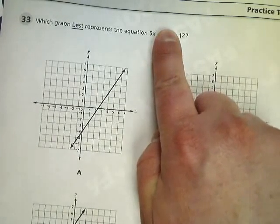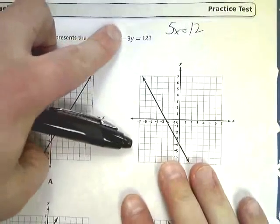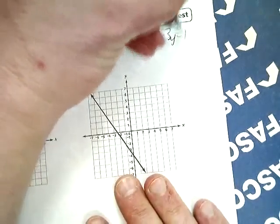So in the first one, I'm just going to eliminate that y term and rewrite 5x equals 12. And in the second set, I'm going to get rid of the 5x and have negative 3y is equal to 12.